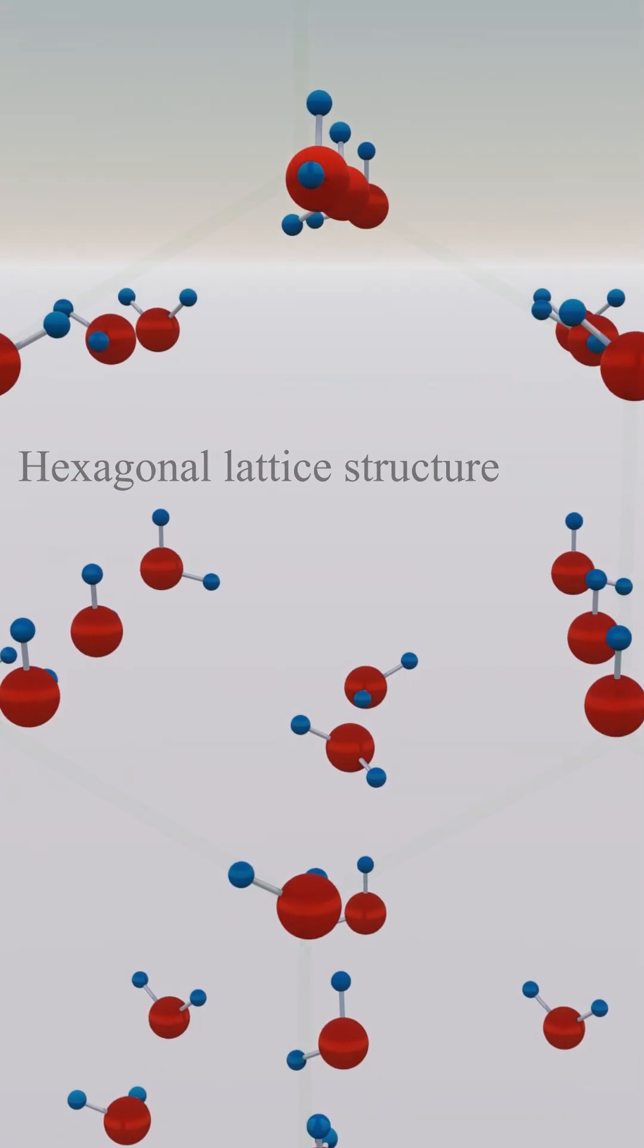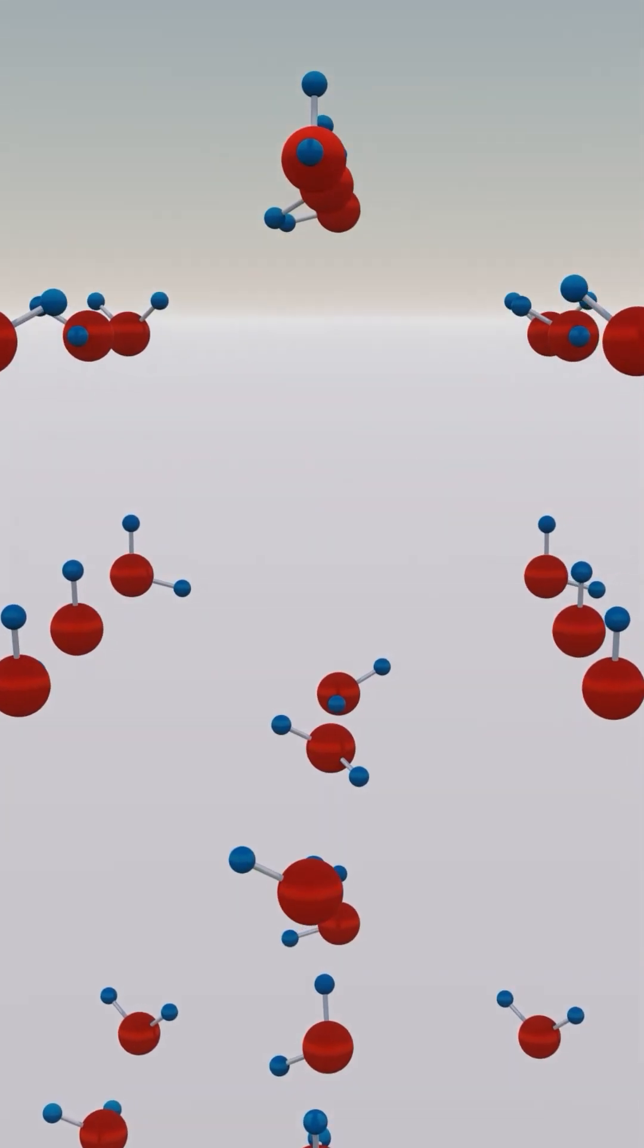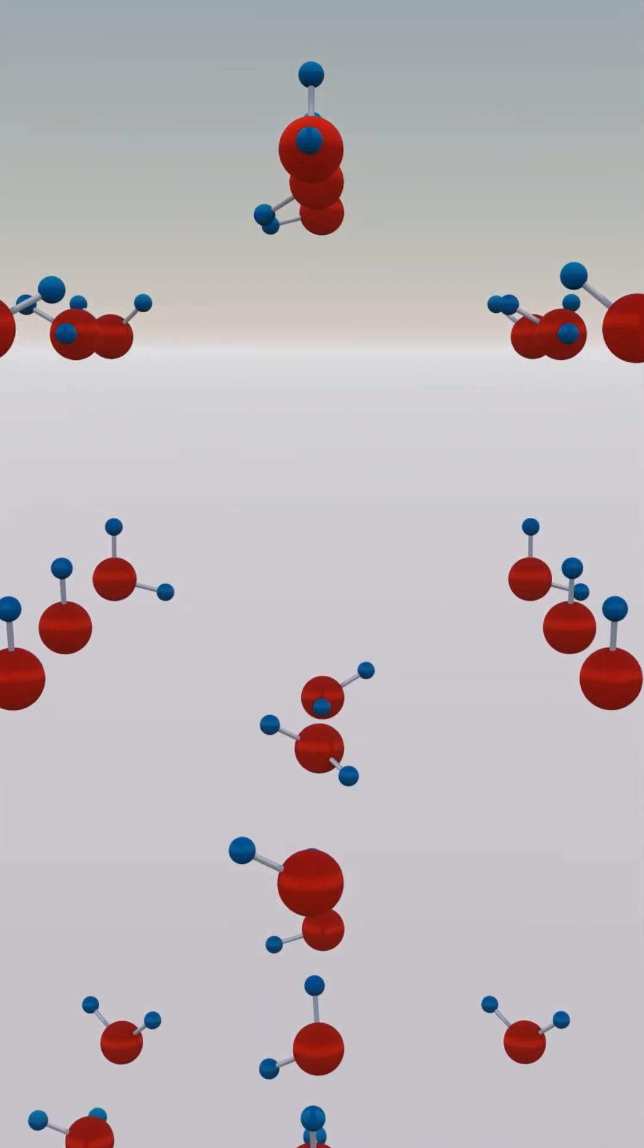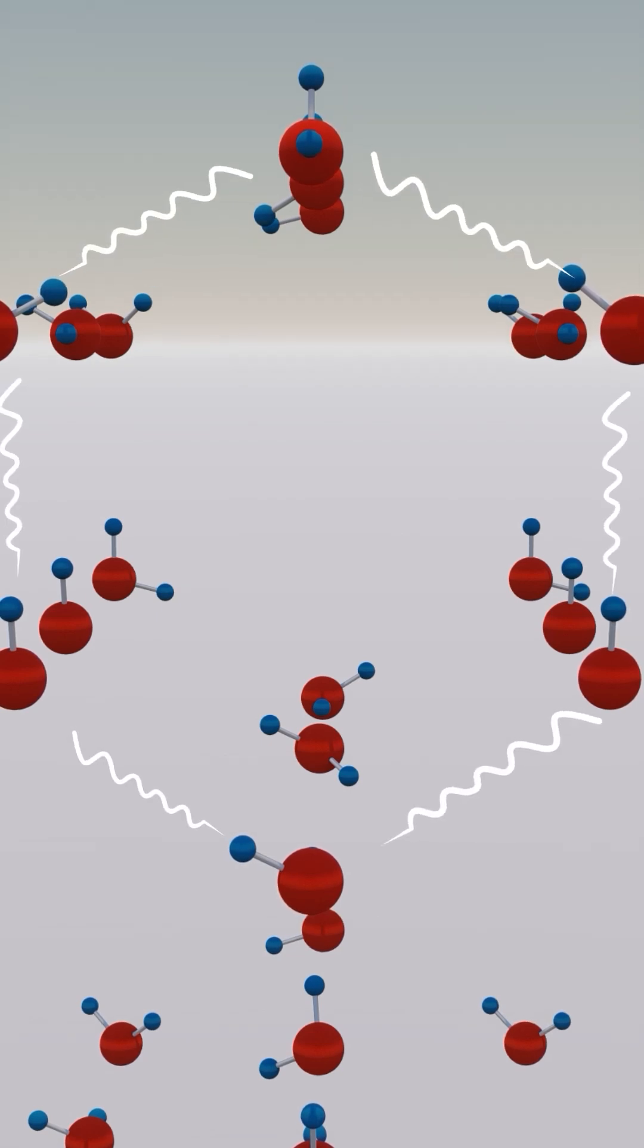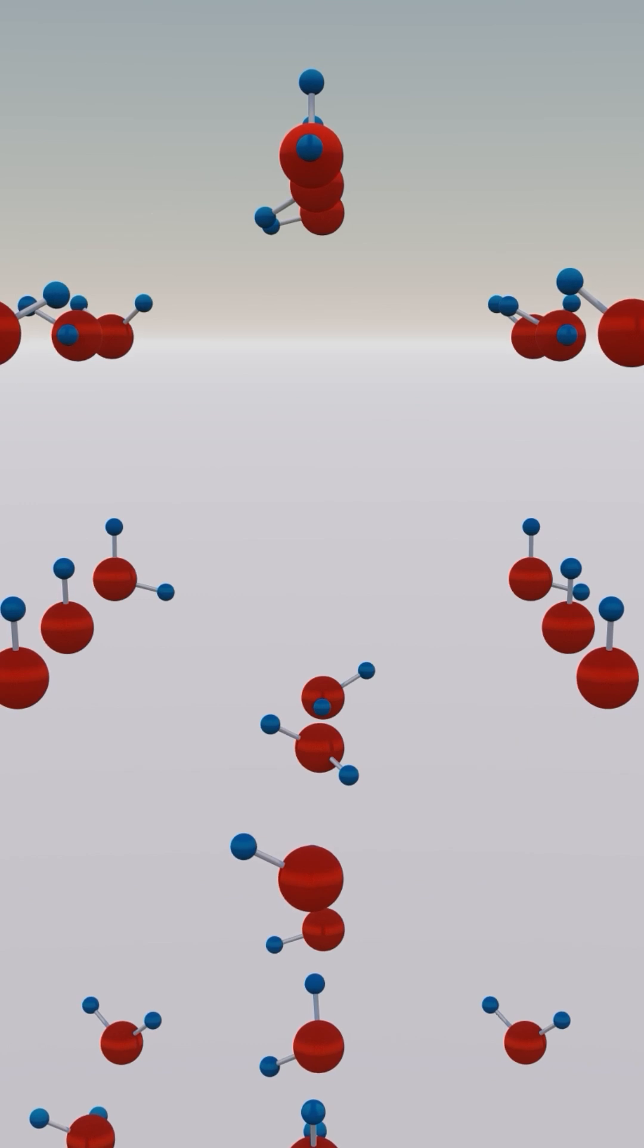These hydrogen bonds are more stable and longer lasting compared to the liquid phase. The structure forms naturally because it allows for the most efficient and stable bonding network, minimizing overall energy while maximizing the number of hydrogen bonds.